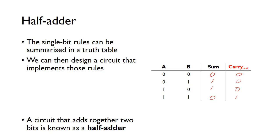Now that we have the truth table, we can design a circuit that implements it. Looking at the sum column, we can recognize that pattern as an XOR function. So the sum is simply A XOR B.